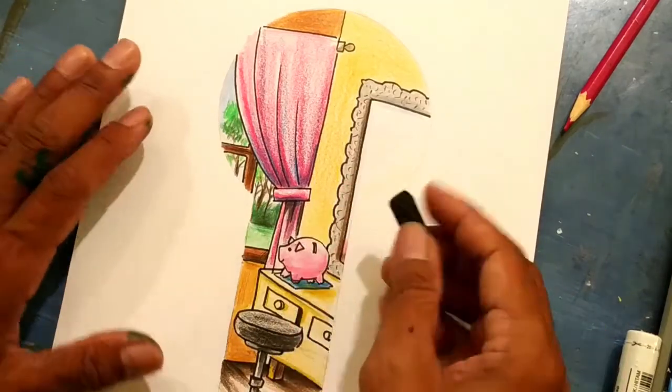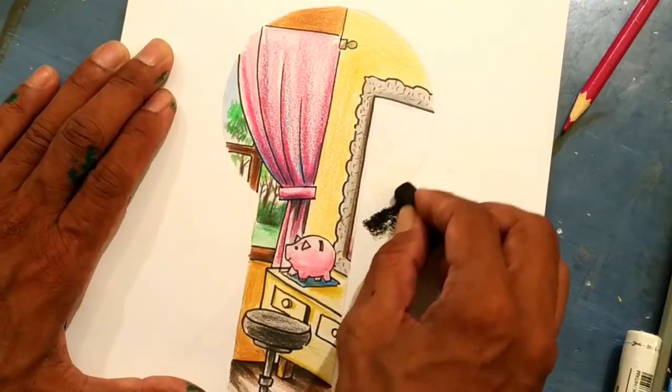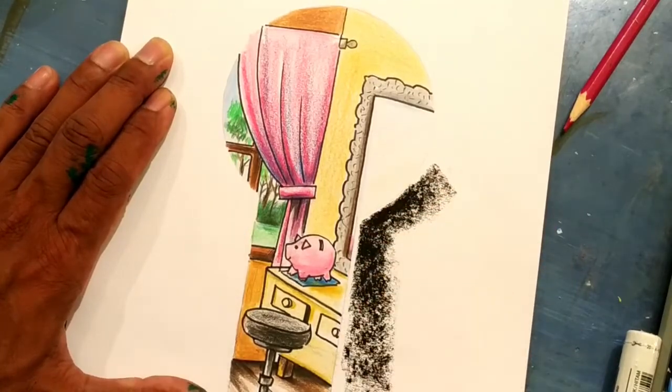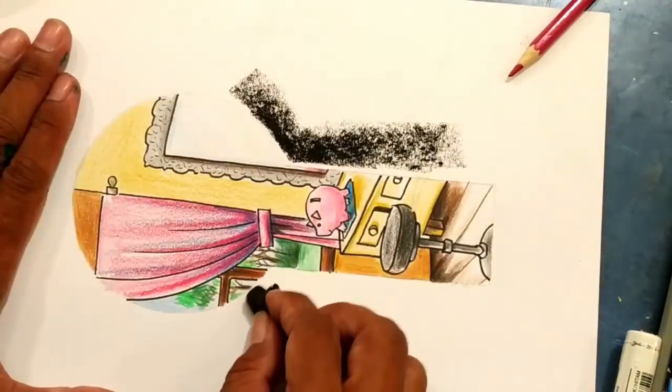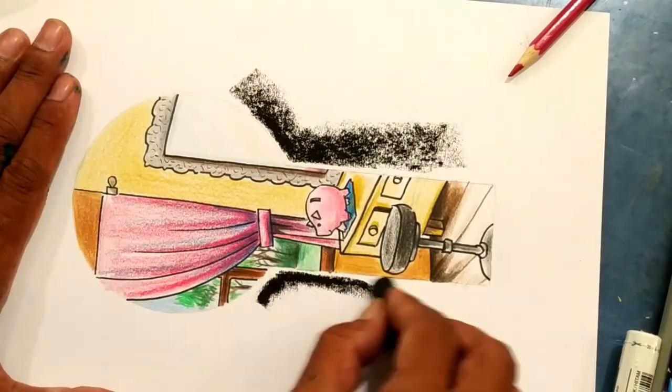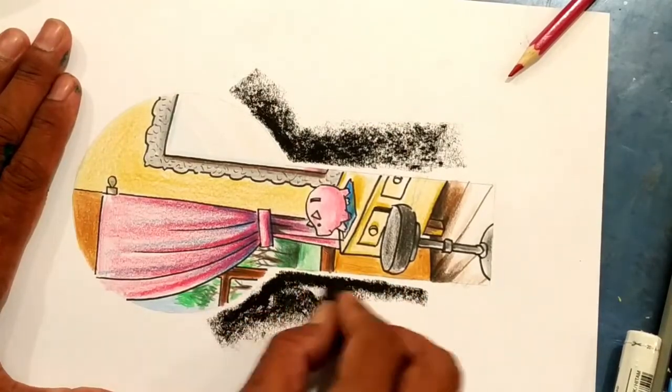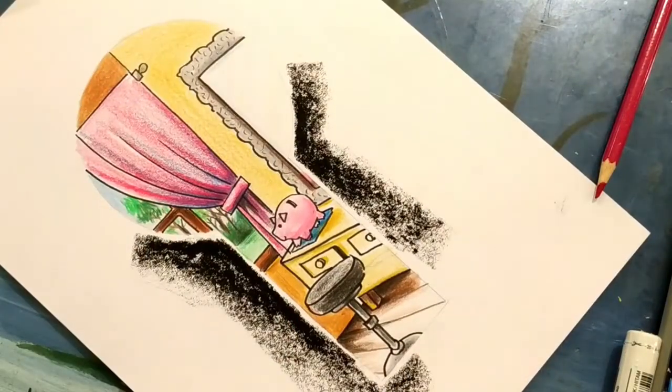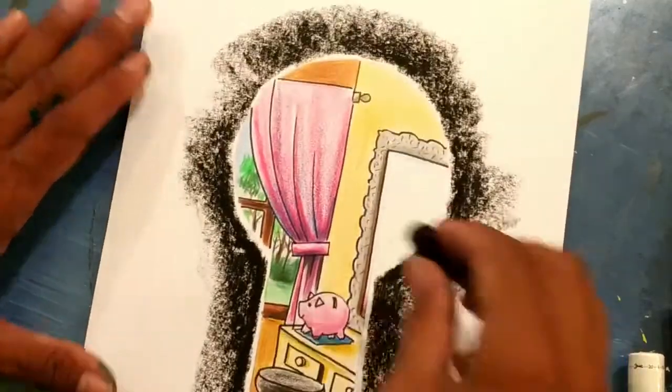Now I'm going to use crayon. So around it, it's going to be so dark. Just drawing around. I turn my paper like this because I find it easier. So just do it if you think it's easier for you. So it's like this.